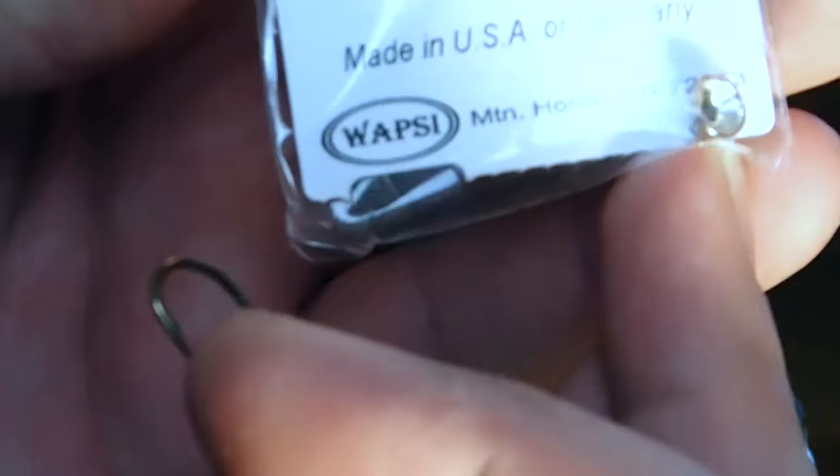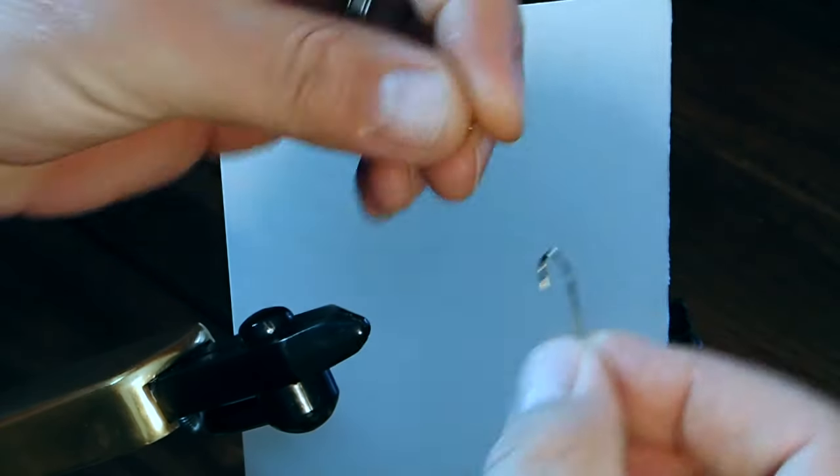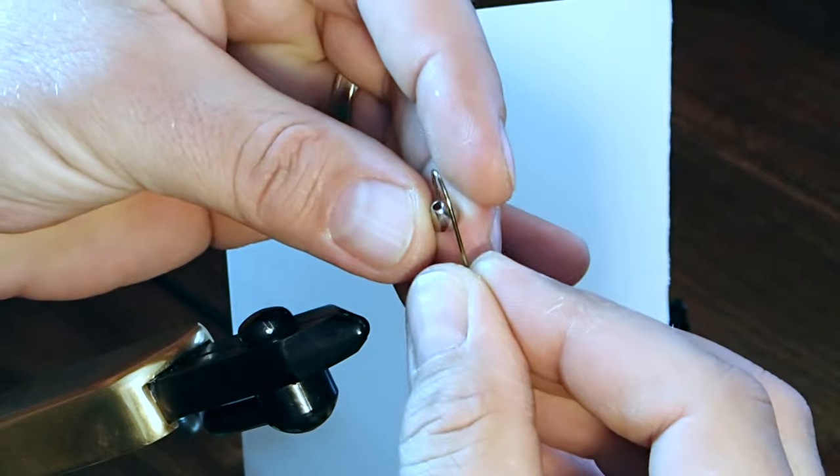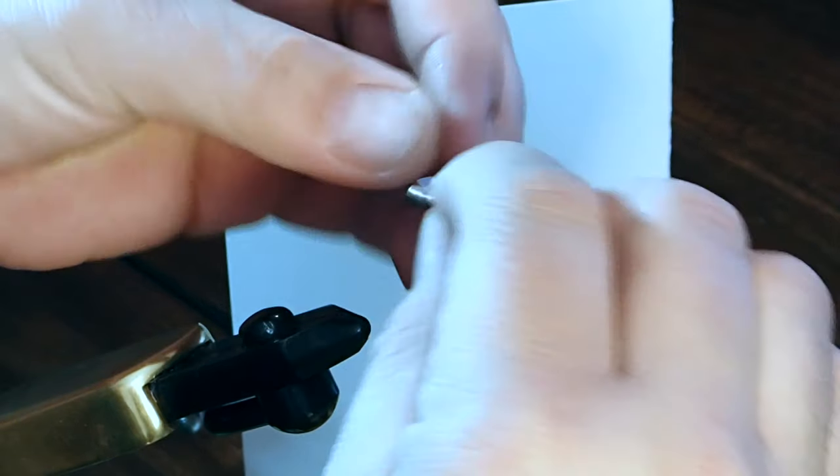Wapsi has a really great tungsten cone head. This is a nickel in size large. And I like that because you get a lot of depth very quickly on this. It also seems to be easier to control on the current.